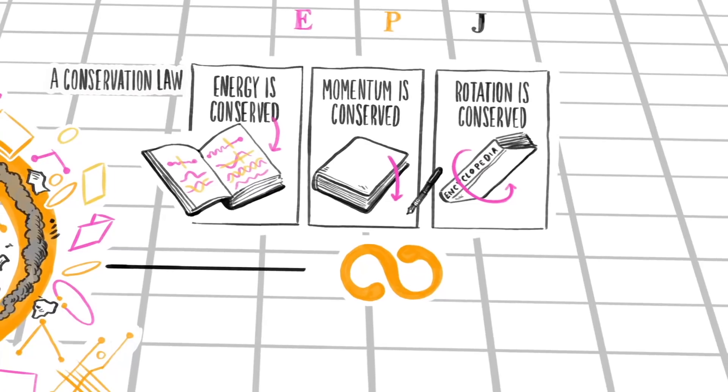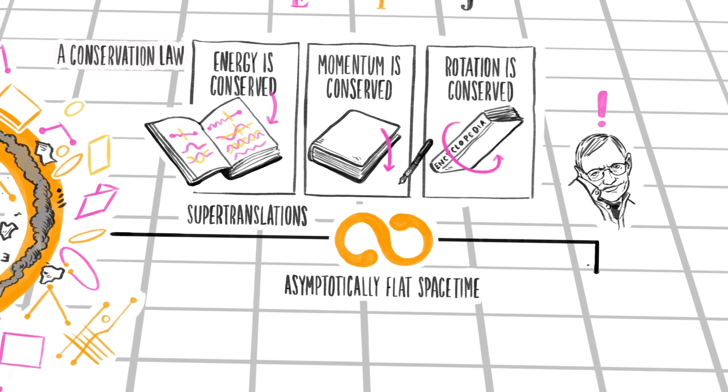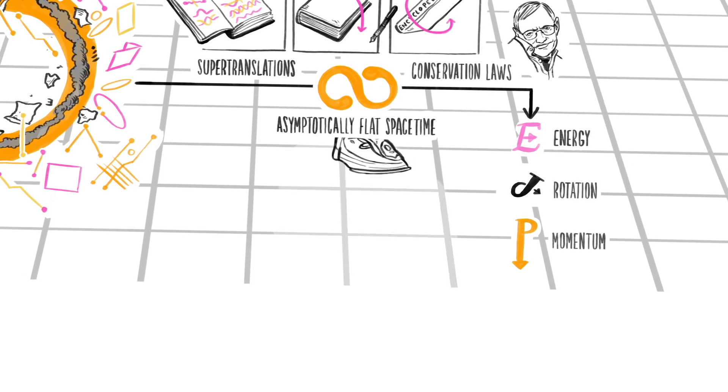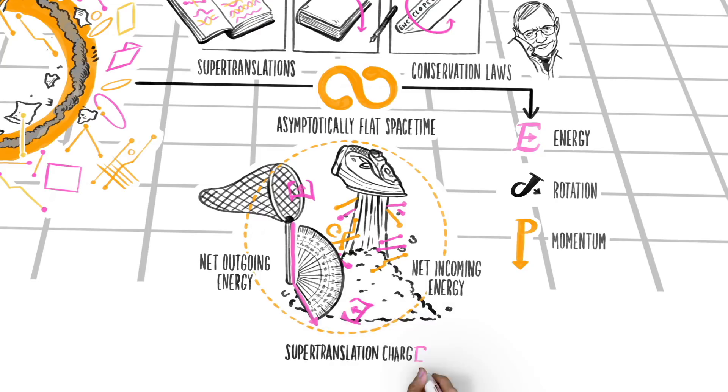The infinite number of supertranslations of asymptotically flat spacetime leads us to the conclusion that there must be infinitely many more conservation laws. Indeed, these conservation laws equate the net incoming energy at any angle to the net outgoing energy at the opposite angle. In this case, the conserved quantity is known as supertranslation charge.